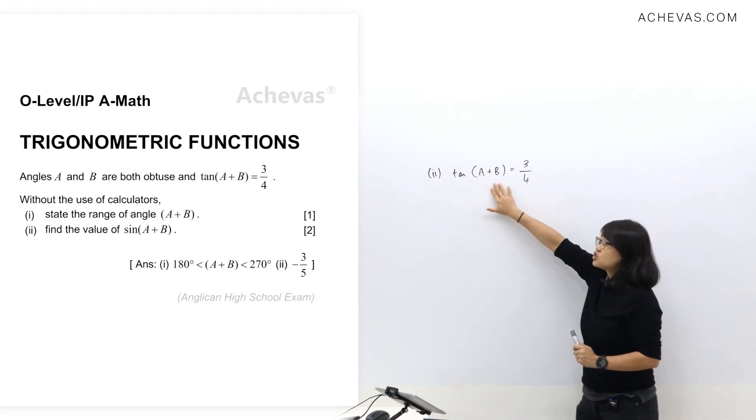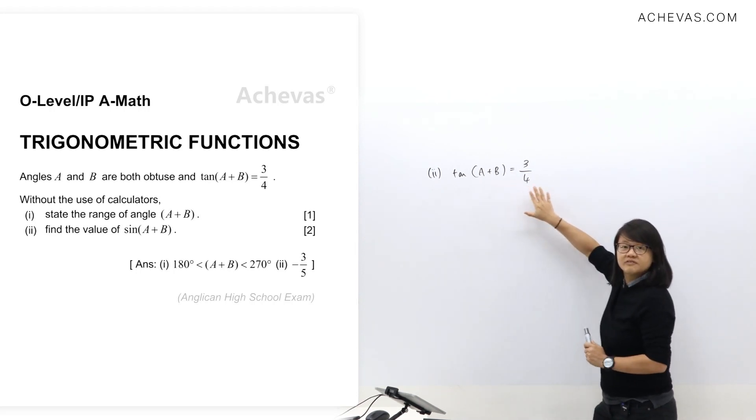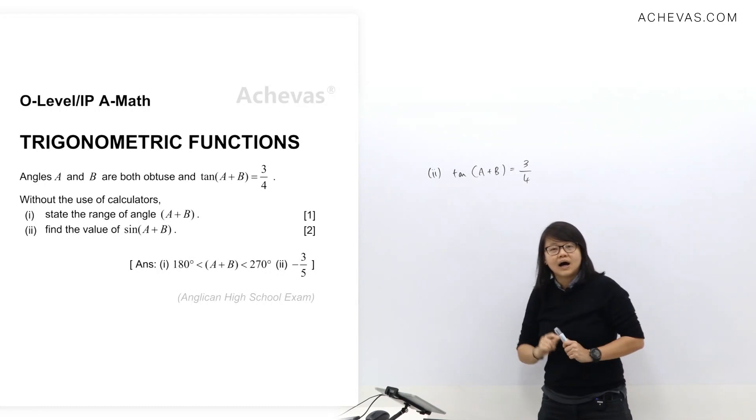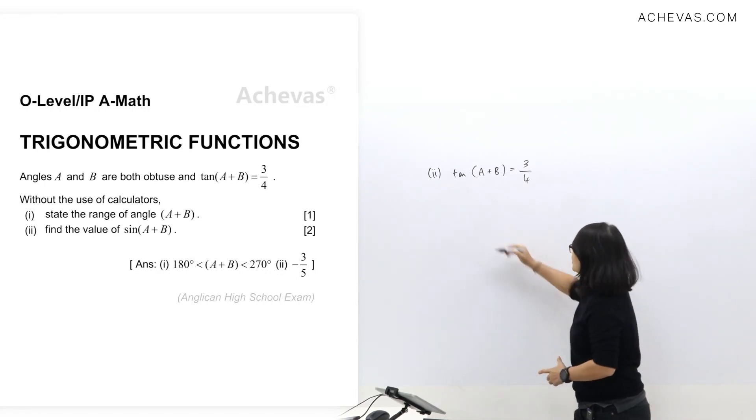Since we are given tangent A plus B, the value is 3 over 4, and from part 1, we already know that the triangle is in quadrant 3. So let me draw an STC quadrant here.